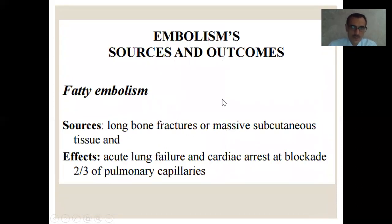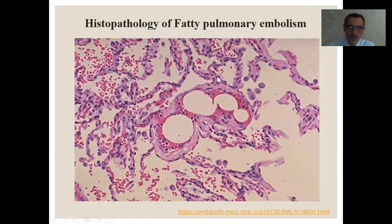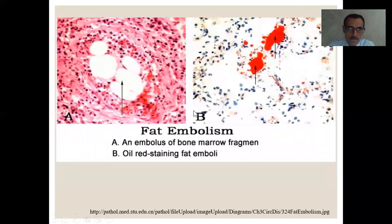Fatty embolism occurs in fracture of the long bones or massive subcutaneous tissue injury. It affects acute lung failure and cardiac arrest when 2/3 of the pulmonary capillaries are obstructed. Here is the histopathology of fatty pulmonary embolism — this is a biopsy taken from the lung where we see fat emboli in the pulmonary vessels. Another histological picture shows bone marrow and fat emboli in the pulmonary tissue.